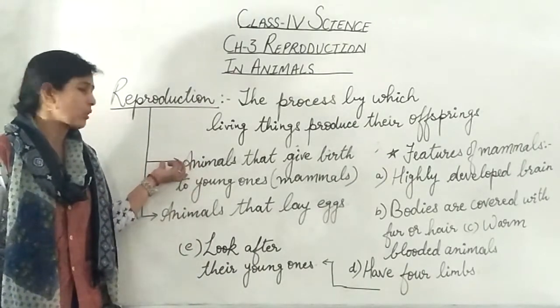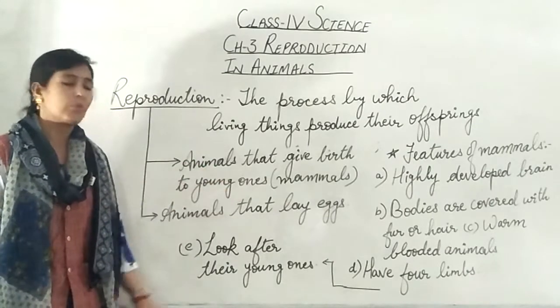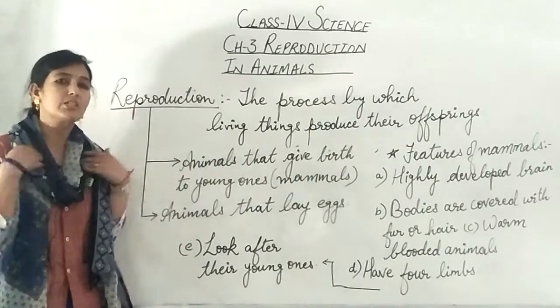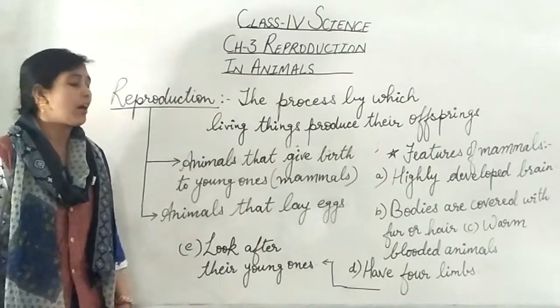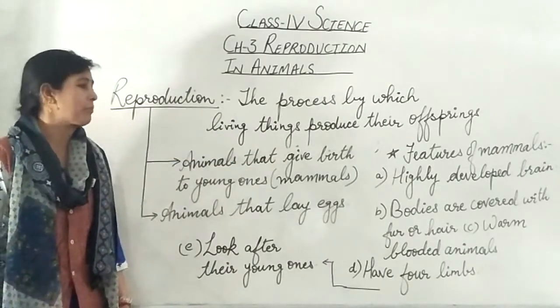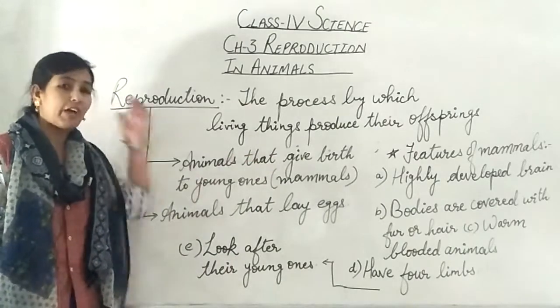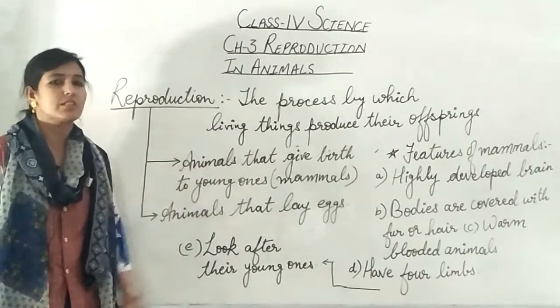Now we are going to take the first topic. Animals that give birth to young ones are known as mammals, which means we are the mammals. There are certain features, how we can categorize them. First characteristic, they have a highly developed brain, means they can think and they can memorize.